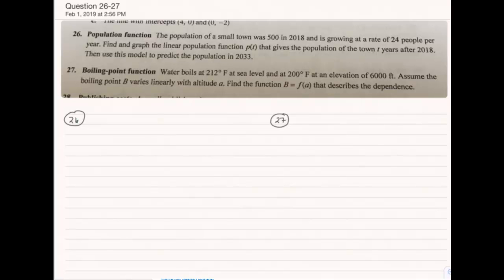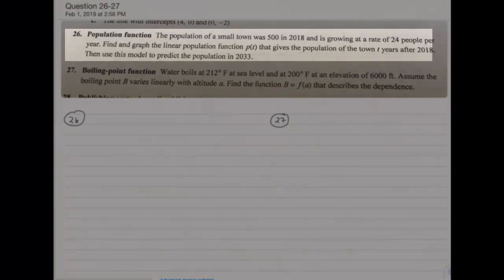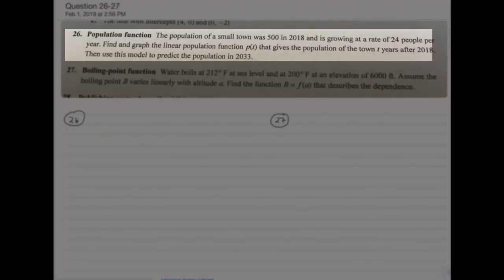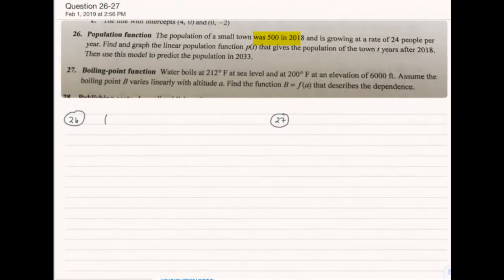These questions involve taking a word problem and coming up with the equation of a linear function that is a straight line. They're set up a little bit differently. The first problem gives us an initial value, so when x equals 0, the population at the beginning is 500. We're also told it's growing at a rate of 24 people per year, which gives us the slope.